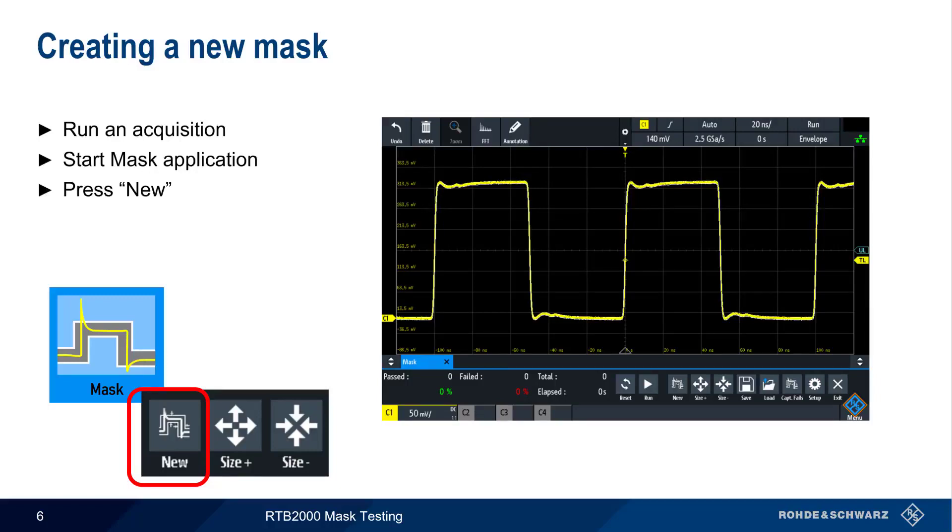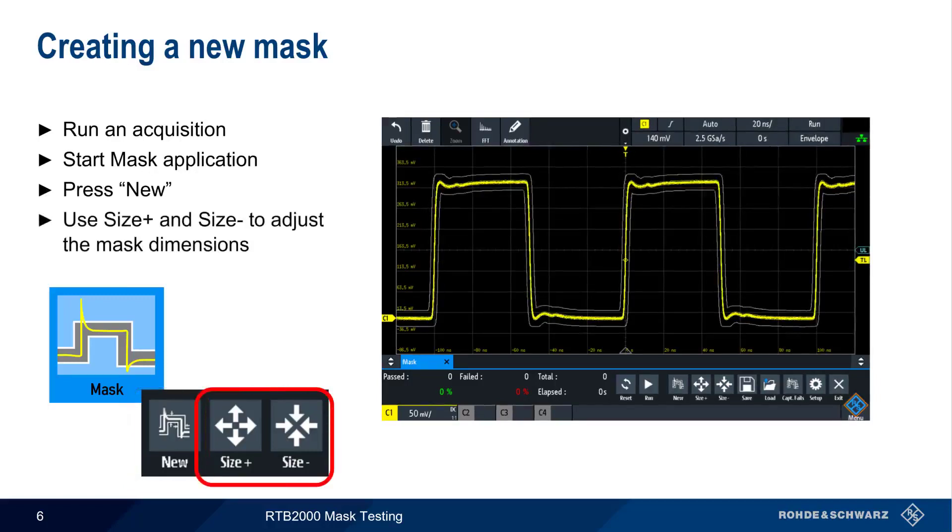To enlarge or shrink this mask, use the Size Plus or Size Minus buttons. Here, we've used Size Plus several times to increase the size of the initial automatically created mask. The mask appears as a thin white line around the waveform. Note that Size Plus and Size Minus scale the mask equally in both the horizontal and vertical directions.